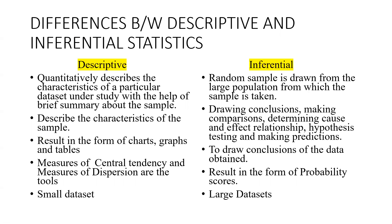In inferential statistics, suppose we are interested in the exam marks of all the students in India. But it is not feasible to measure the exam marks of all the students in India. So what do we do? We will measure the marks of a smaller sample of students — say, 1,000 students. This sample will now represent the large population of Indian students. Hope you understand the differences between the two. Thank you.